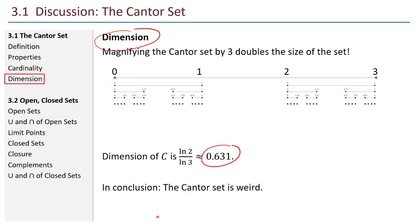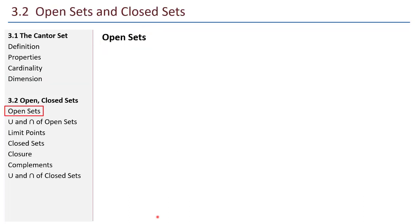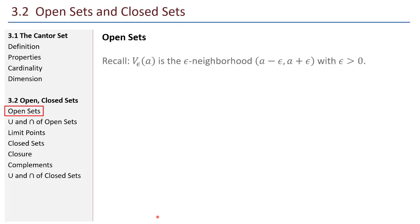In conclusion, the Cantor set is weird. There are a lot of weird things that can go on with sets of real numbers, and in this chapter we explore a few of those ideas. Let's jump into the chapter proper with section 3.2, open sets and closed sets.